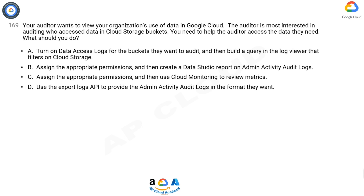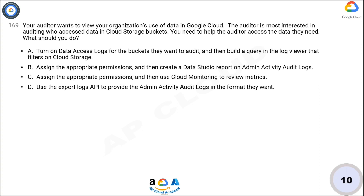A: Turn on data access logs for the buckets they want to audit, and then build a query in the Log Viewer that filters on Cloud Storage. B: Assign the appropriate permissions and then create a Data Studio report on admin activity audit logs. C: Assign the appropriate permissions and then use Cloud Monitoring to review metrics. D: Use the Export Logs API to provide the admin activity audit logs in the format they want. Now take 10 seconds to think about the answer.